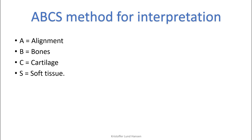When looking at bone x-rays there are many ways you can go forward. One mnemonic that you could use is the ABCS method. As with all other bone x-rays it also works well for the shoulder. A stands for alignment, B is for bones, C is for cartilage, and S is for soft tissue.